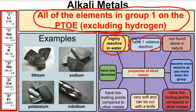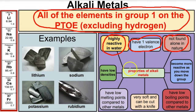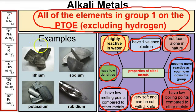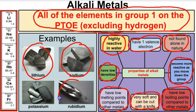Alkali metals have one valence electron — all the electrons in the outermost energy level. Because they're so reactive with water, they're never found alone in nature. Sodium, for instance, will react with water in the soil or water vapor in the atmosphere. These guys typically have low densities, become more reactive moving down the group, have low boiling and melting points compared to other metals, and are very soft — you can cut sodium or potassium with a butter knife.